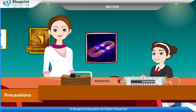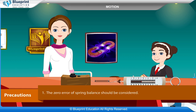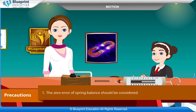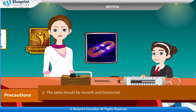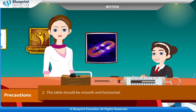Precautions: The zero error of the spring balance should be considered. The table should be smooth and horizontal. The thread used should be inextensible.